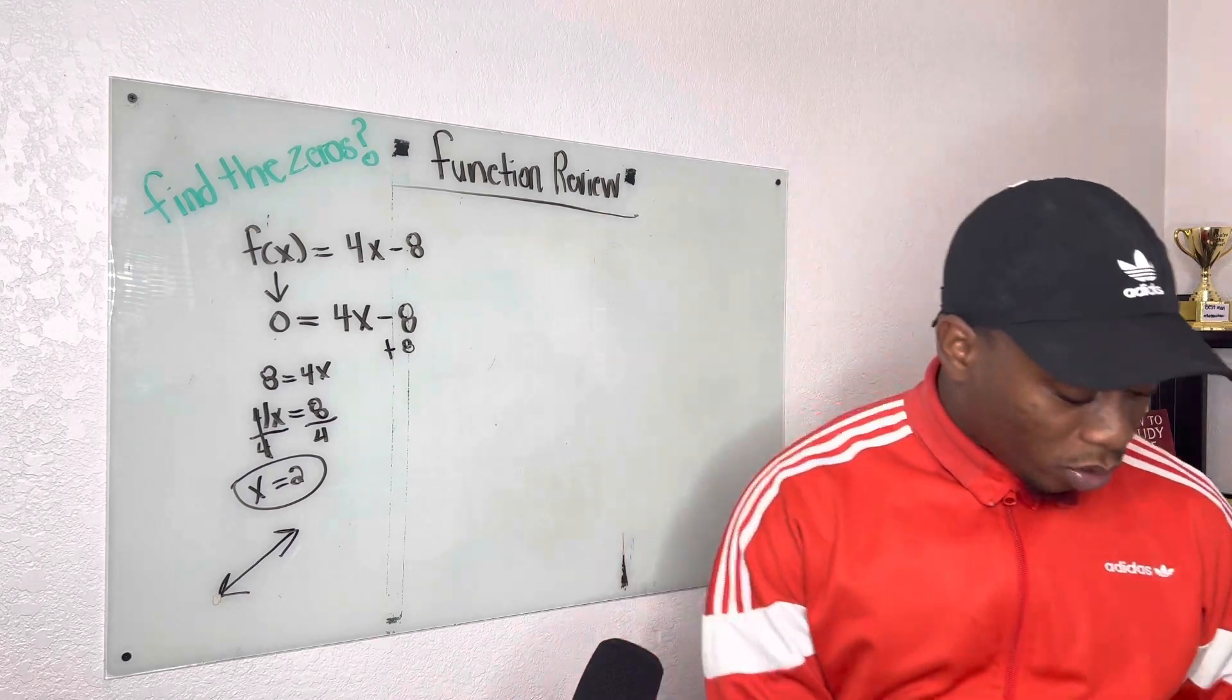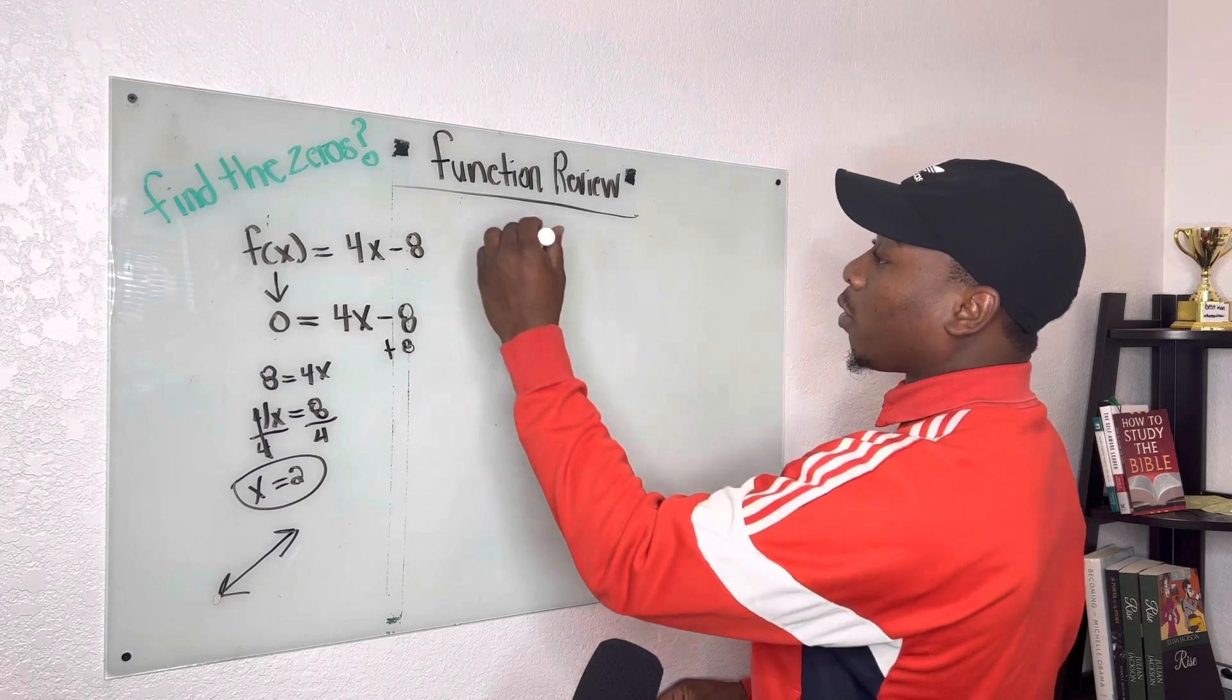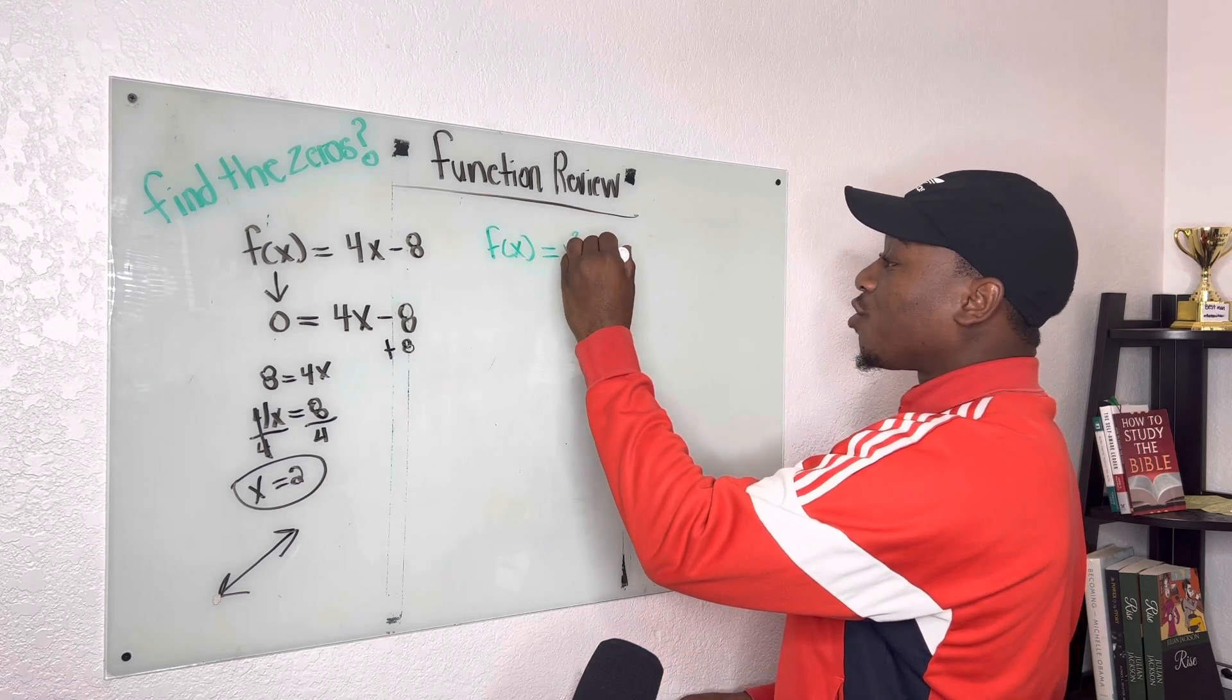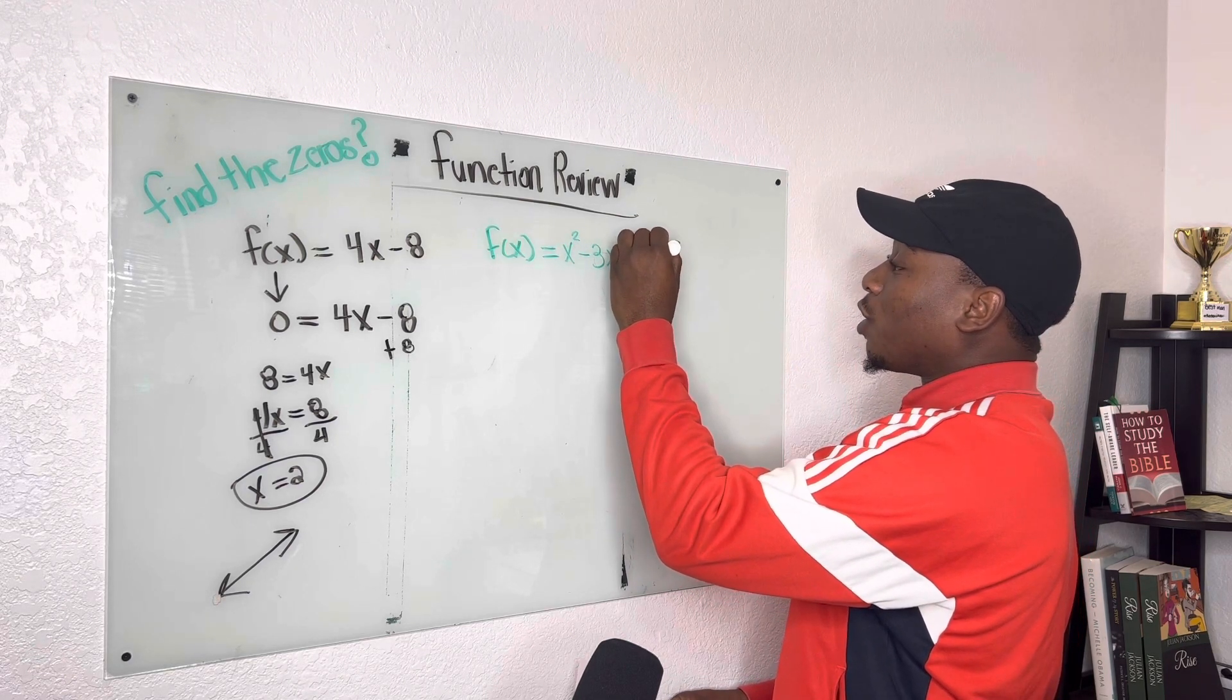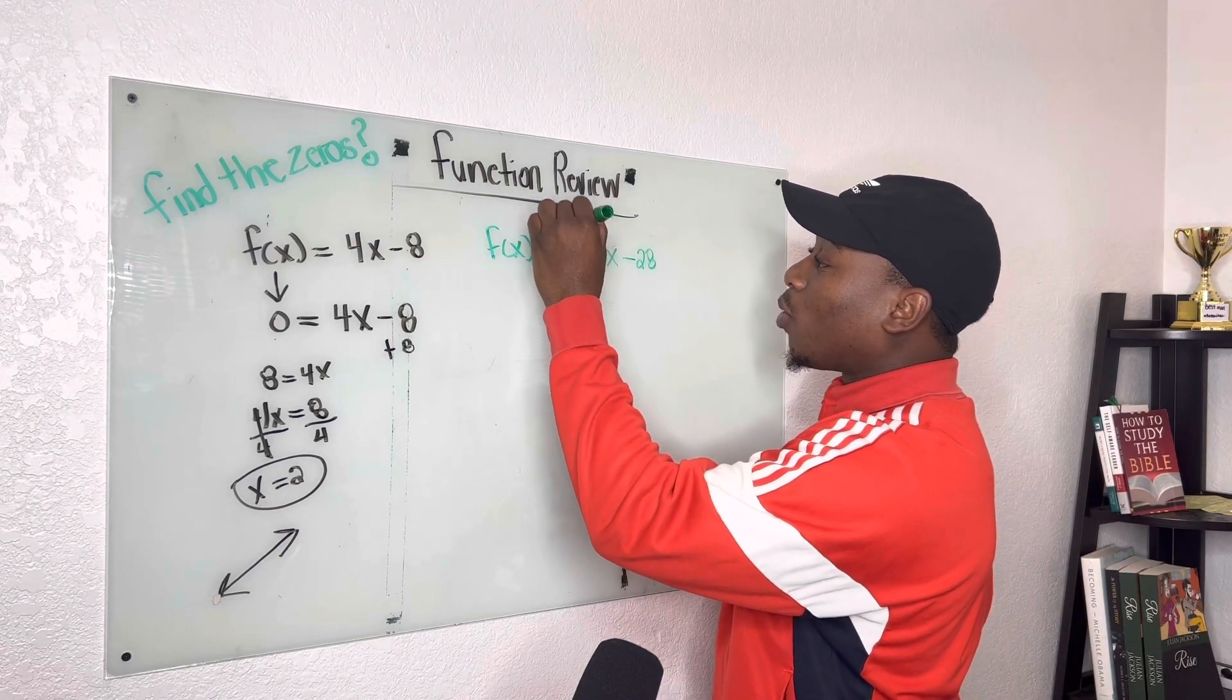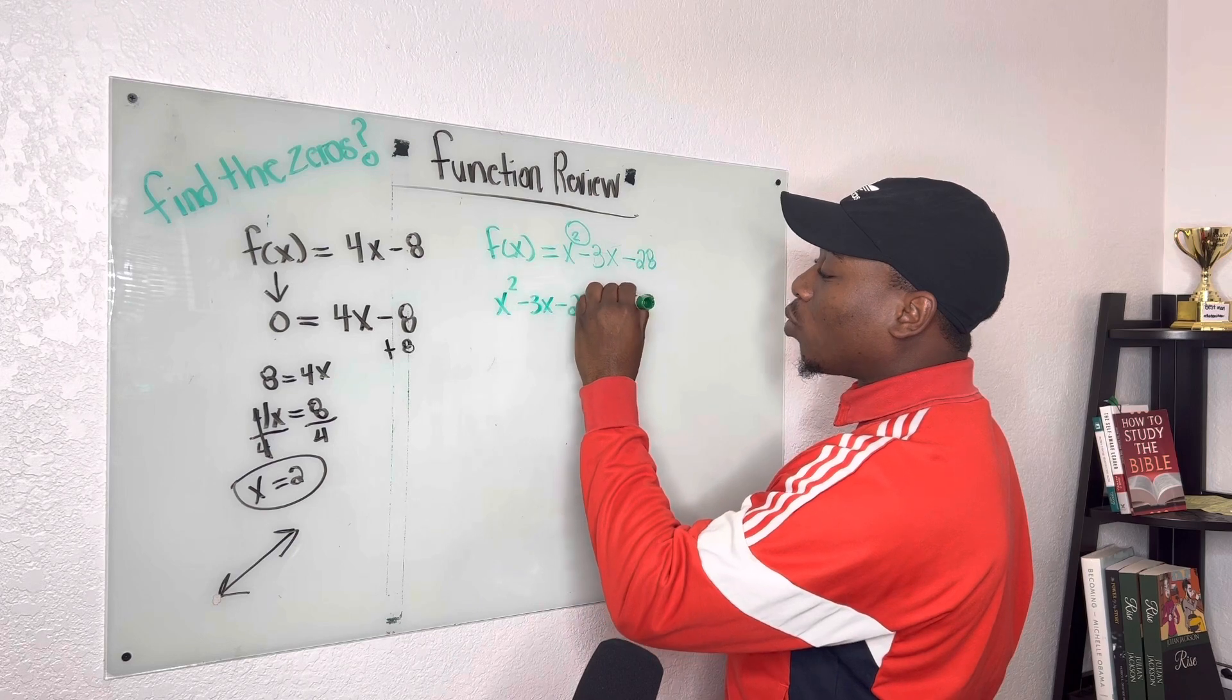All right, let's go over to the second one. So in our second problem, they give us f of x is equal to x squared minus 3x minus 28. So same rules apply. Only difference now from this problem to the second is our exponent.